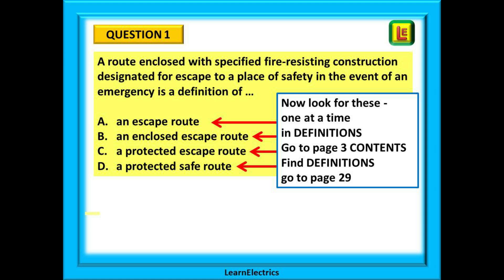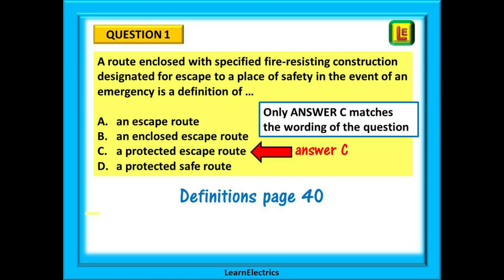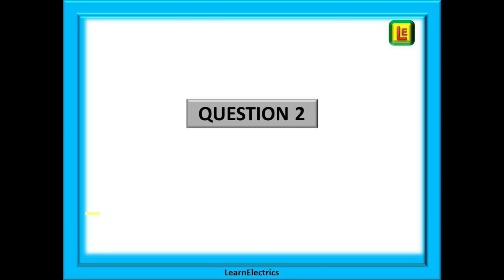Now look for each of the four possible answers one at a time in definitions. You are looking for an almost exact word match with the words in the question. Find 'escape route' — does the definition in the book match the question almost word for word? No. Then move on to 'enclosed escape route' — it's not there, so move on. Find 'protected escape route', and bingo, we have an exact match. Only answer C matches the wording of the question. Protected escape route is found on page 40.